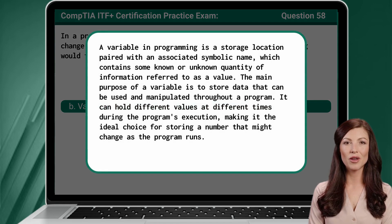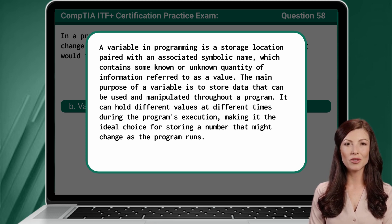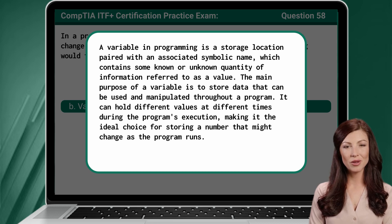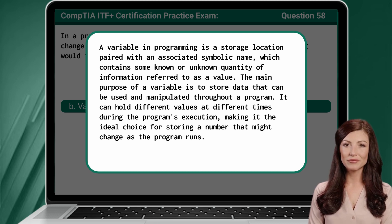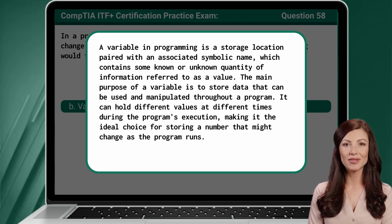A variable in programming is a storage location paired with an associated symbolic name, which contains some known or unknown quantity of information referred to as a value. The main purpose of a variable is to store data that can be used and manipulated throughout a program. It can hold different values at different times during the program's execution, making it the ideal choice for storing a number that might change as the program runs.